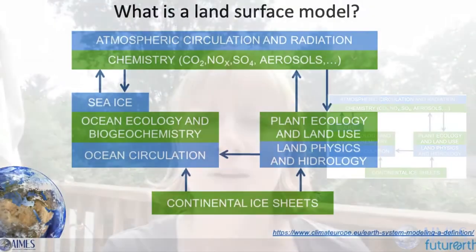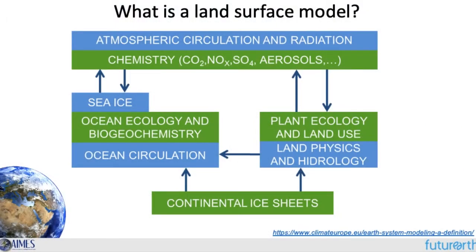First up, we're going to start with what is a land surface model? In this case, we're talking about the models that form the land component of Earth system models, shown in this schematic here on the right. They comprise land components, ocean and sea ice components, continental ice sheets, all interacting together with atmospheric circulation. Sometimes land surface models are also called terrestrial biosphere models, or terrestrial ecosystem models, or dynamic global vegetation models, and those terms are used roughly interchangeably.